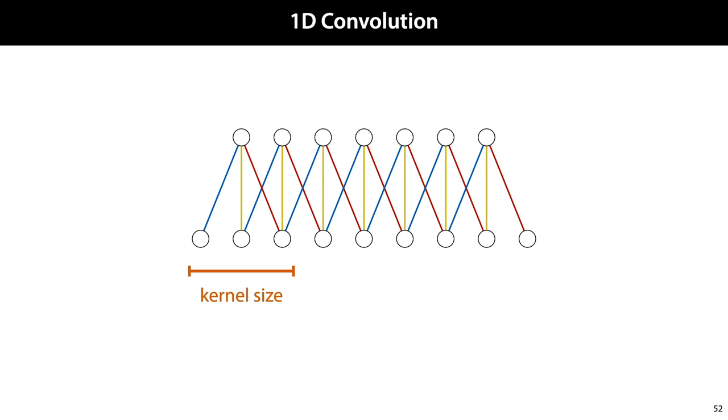We call the size of the neighborhood that one hidden unit is connected to the kernel size. One drawback in this picture is that the nodes on the left and right contribute only to one hidden node, whereas the nodes in the middle each contribute to three hidden nodes. This may mean that the information on the sides of our input is more easily ignored.